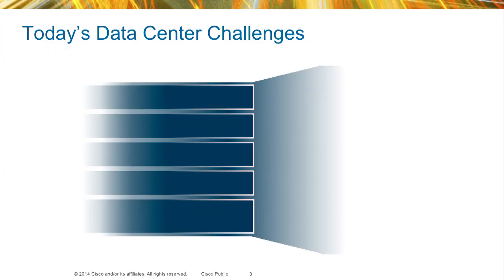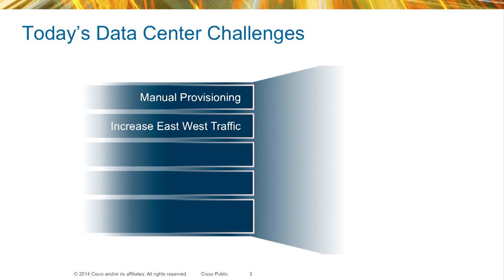We're going to talk about the challenges in the data center. First is manual provisioning. Manual provisioning is bad, especially when you're trying to bring up a workload. If you have to go to each one of your switches and add in a physical VLAN, that's going to be a very difficult task. There are going to be mistakes made every time you have to bring up a workload and provision all the different switches — not because of anything to do with you, it's just because we're all human. Automation is much easier and less tedious.